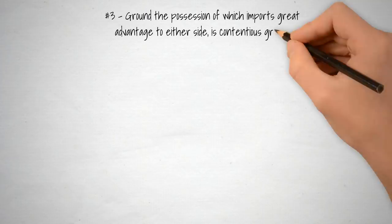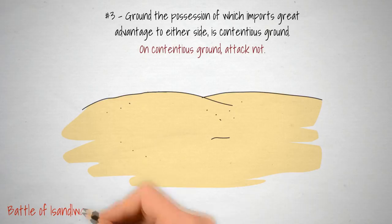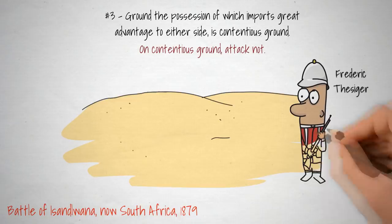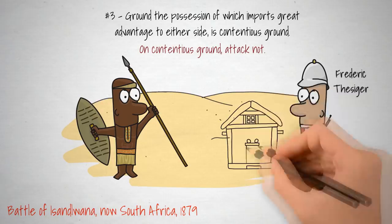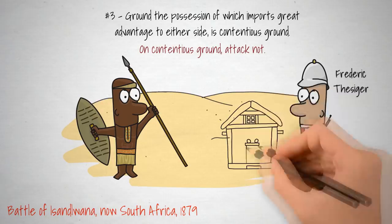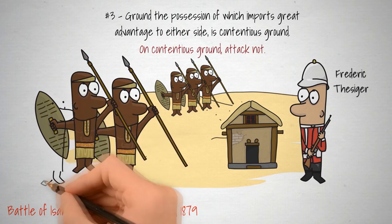General Frederick Feisiger led most of his British soldiers from their camp to attack what he thought was the main Zulu force, as part of the British invasion in Zululand. Feisiger had failed to set up his camp defensively and ignored information that the Zulus were close by. He was tempted away by a smaller Zulu force that were creating a diversion, leaving the main Zulu army to attack the camp. The camp was annihilated and the British were forced to retreat out of Zululand.